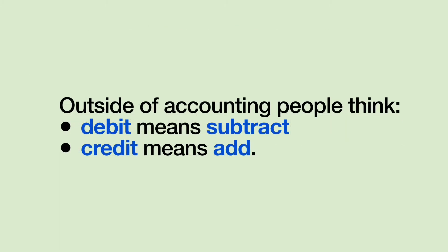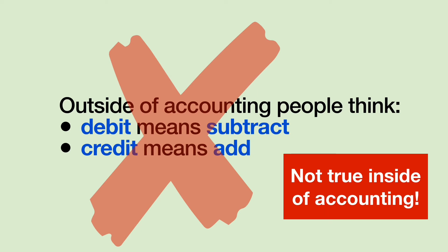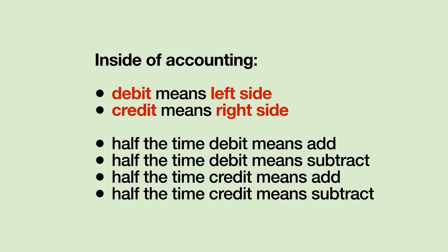Let's talk about the words debit and credit. Most people have heard these words, but these words have different meaning in the accounting office than they do out in the general population. Outside of the accounting office, debit means subtract. But that's not necessarily true in the accounting office. This is sometimes a stumbling block for students. You're going to have to consciously pause whenever you hear the words debit and credit until your mind can be fluent with the new meanings of these words.